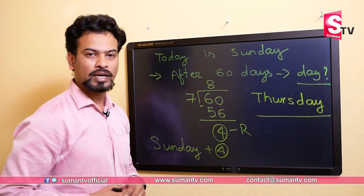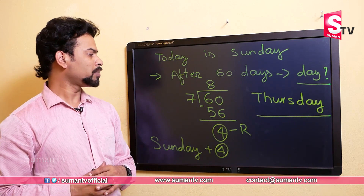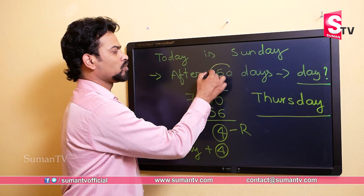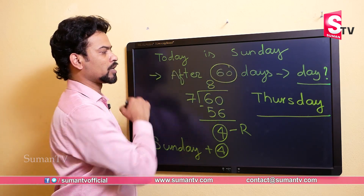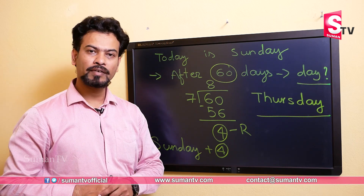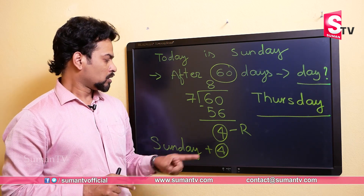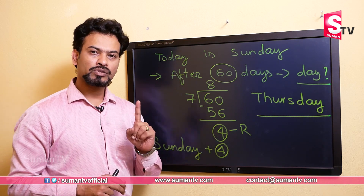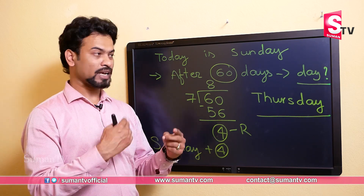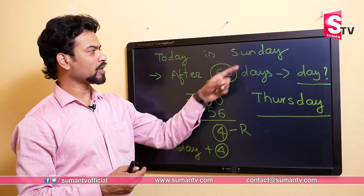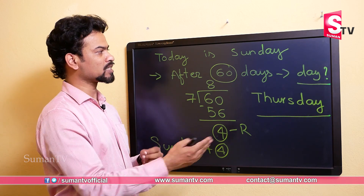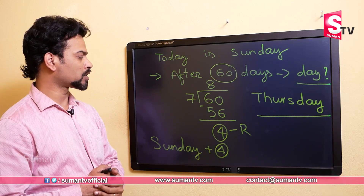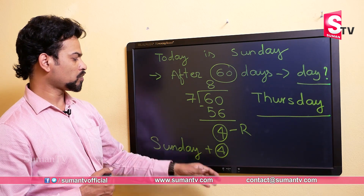So to summarize this trick: we take the number of days and divide by 7, then find the remainder. If the remainder is 1 that is the next day after the given day. If it is 2, then 2 days after; if 3, then 3 days after; if 4, then 4 days after. That is the trick for finding days in the future.